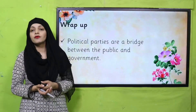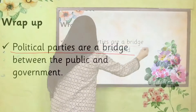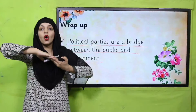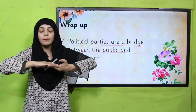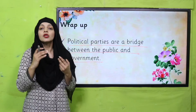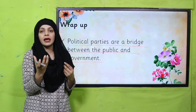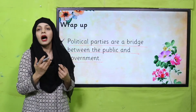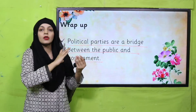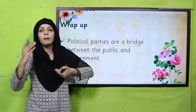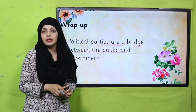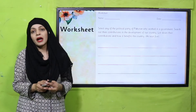For today's wrap-up: political parties are a bridge between the public and government. Political parties jo hain, woh ek bridge hain — government aur logon ke darmiyan gap ko pura karti hain. Kyunki jo candidates hain political parties ke, woh bhi aap logon mein se hi — general public mein se — aate hain. Is tariqe se jab government banti hai, toh woh public ki awaaz government tak pohnchaati hain aur public ke masail hal kiye jaate hain.